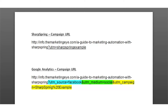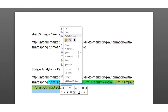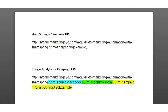In order to track a campaign in SharpSpring and in Google Analytics using a single URL, what you simply do is copy the campaign URL which we set up as a Google Analytics example here, and attach it on to your already made SharpSpring URL. You need to put your ampersand (&) symbol here.